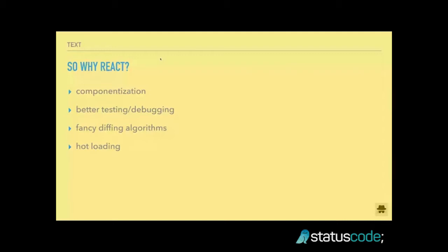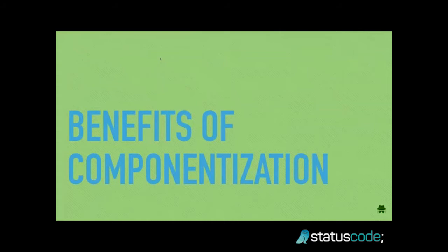React gives you fancy diffing algorithms, which make it so that you don't have to worry about deciding what to update and what not to update. You just render stuff and it works. And finally, you have hot loading, which works really well when you have a giant data set that takes a couple of seconds to load and render, and all you want to do is change some styling. In reality, it all comes from componentization — that's really the main benefit. Because you have components, React understands how your code fits together, and you can dynamically hot load code into your browser without changing the other parts.